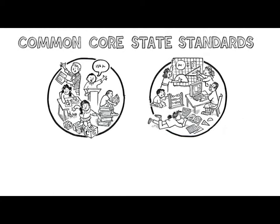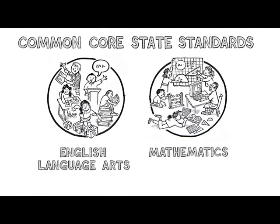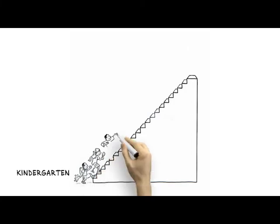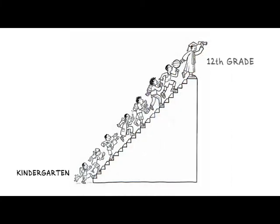Here's how it works. You can think of kindergarten through 12th grade like a giant staircase. Each step is a skill your child needs to learn before stepping up to the next one.